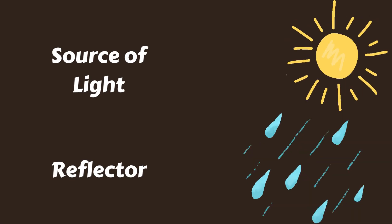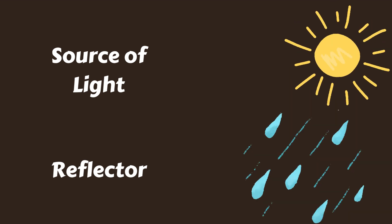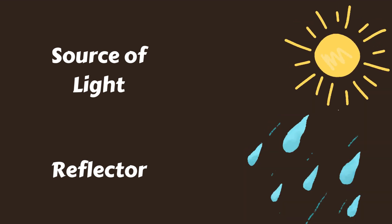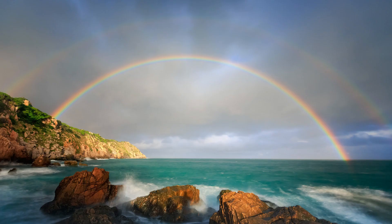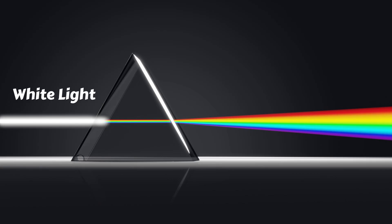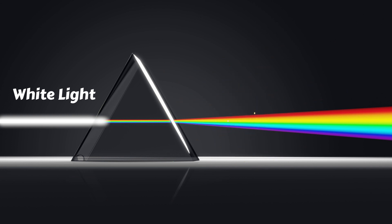The same thing happens in nature. Here the source of light is the sun, and the mirror in water is a raindrop. When sunlight hits a raindrop, light gets reflected in different angles and a rainbow appears in the sky. The secret is that white light is made up of seven different colors — yes, it is!